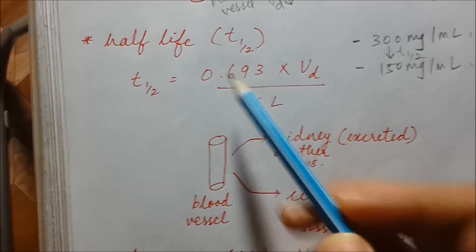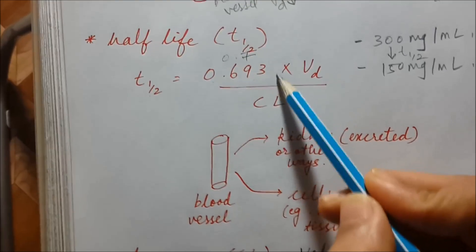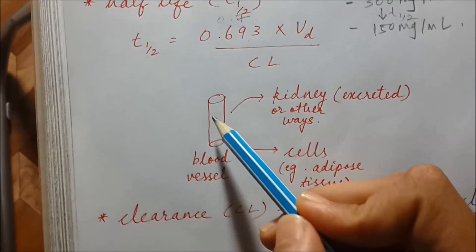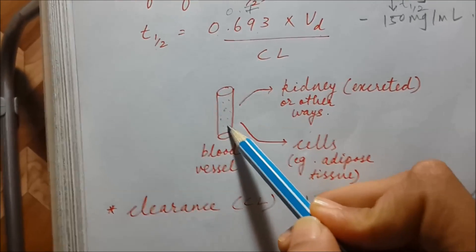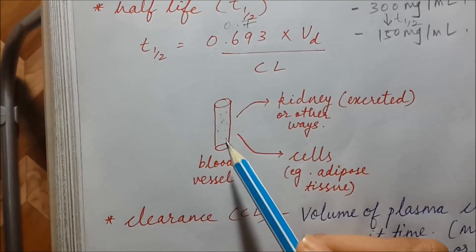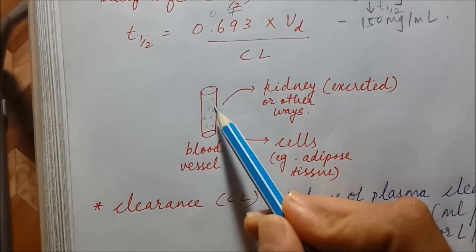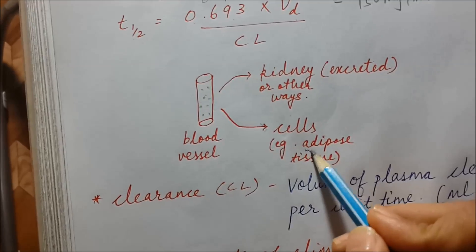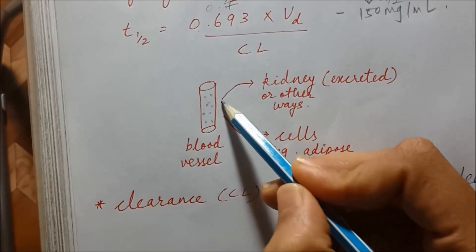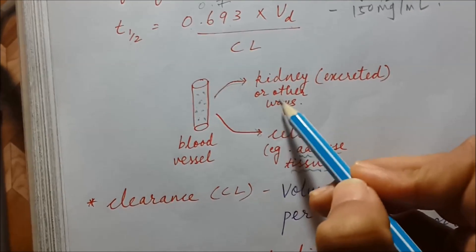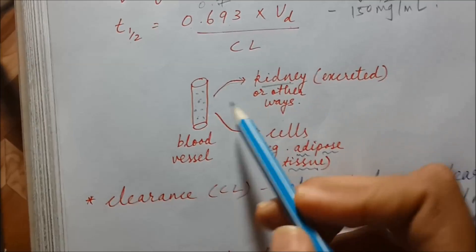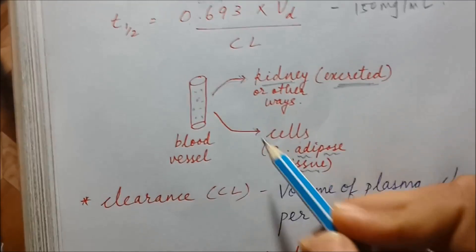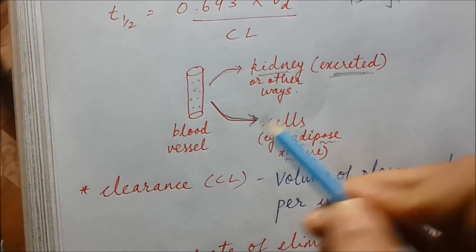The formula for half-life is: t½ = 0.693 (or 0.7 for simplicity) multiplied by volume of distribution, divided by clearance. To understand this, consider some amount of drug in the plasma. It has two fates: it can go into cells — mostly adipose tissue for storage — or it can go to the kidney for excretion.